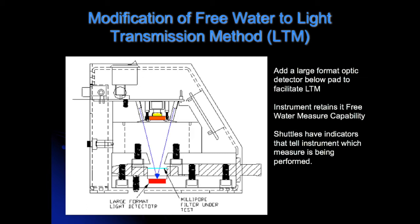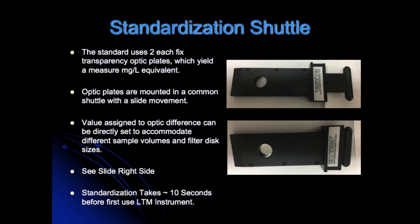This keeps the unit extremely small at only 4 inches by 4 inches on a desktop. Similar to what we did with the JFWA-1 for measuring free water and developing a standardization shuttle for verification and field calibration, we have also developed a standardization shuttle for the particulate side of the device for the light transmission method part of the instrument. The particulate standard shuttle uses two fixed transparency optic plates which yield a measured milligrams per liter equivalent. Optic plates are mounted in a common shuttle with a slide movement. The value assigned to optic difference can be directly set to accommodate different sample volumes and filter disc sizes. The slide goes in and out and it's a magnetic slide, which is how the device knows if the slide is in or out.